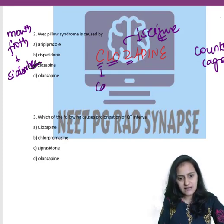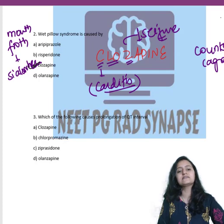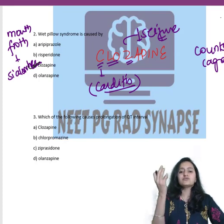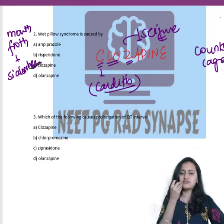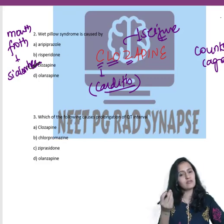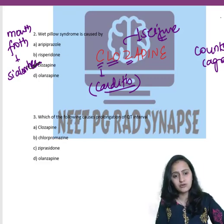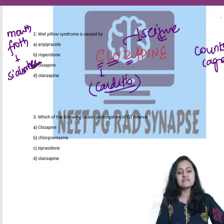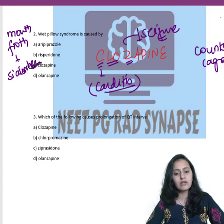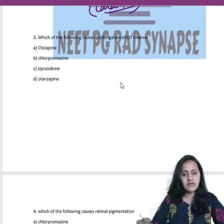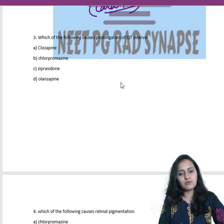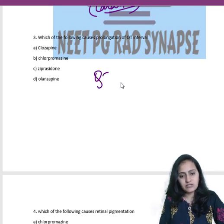You can also remember C stands for carditis as well. So the side effects of Clozapine are: carditis, counts low (agranulocytosis), seizures, and sialorrhea (wet pillow syndrome). These are the important side effects of Clozapine — that is why wet pillow syndrome is caused by Clozapine.